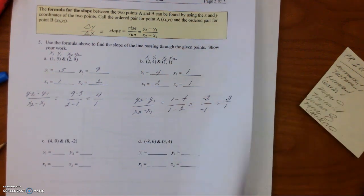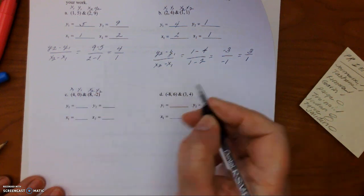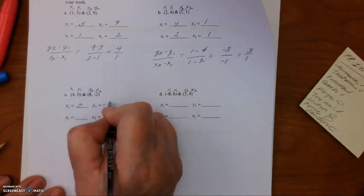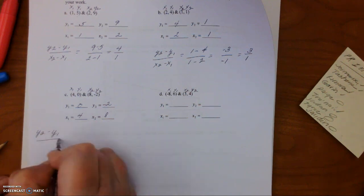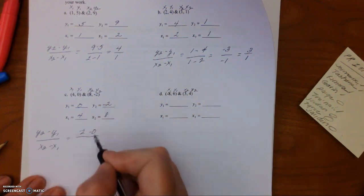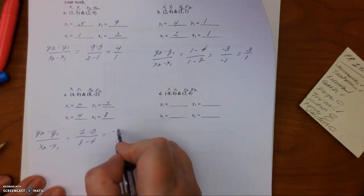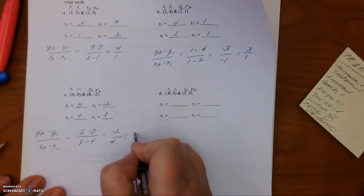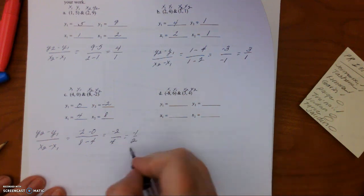So now let's do the next set. Remember, x1, y1, x2, y2. So y1 is 0, y2 is negative 2, x1 is 4, x2 is 8. So (y2 minus y1) over (x2 minus x1). We have y2 is negative 2, y1 is 0, x2 is 8, x1 is 4. So negative 2 minus 0 is negative 2, and 8 minus 4 is 4. We can simplify it to equal negative 1 half. If you divide both the numerator and denominator by 2, it goes down to 1 half. So this is simplified.